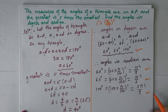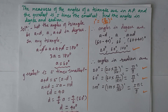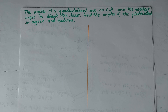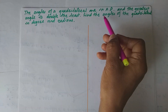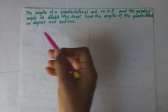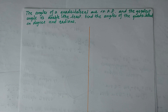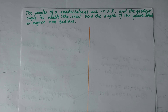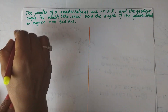In this way, we have found the angles in degree as well as in radians. Now let's see the next problem. The angles of a quadrilateral are in arithmetic progression and the greatest angle is double the least. Find the angles in degree and radians. For a quadrilateral, we take four terms: a−3d, a−d, a+d, and a+3d.